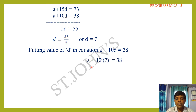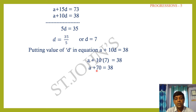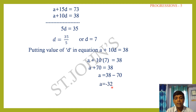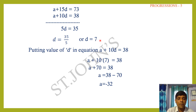Transposing 70: a = 38 − 70 = −32. So the first term a = −32 and the common difference d = 7.